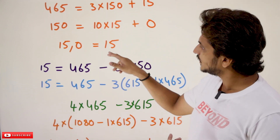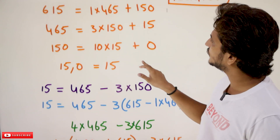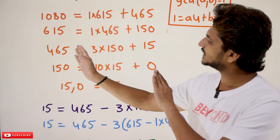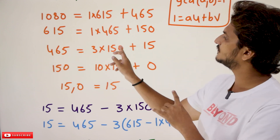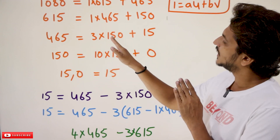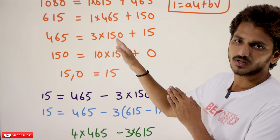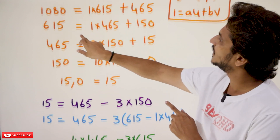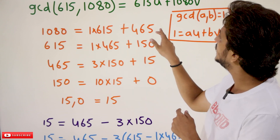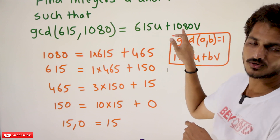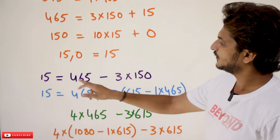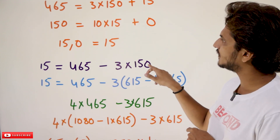To find u and v we go in reverse order. From the last step where GCD = 15, we write: 15 = 465 − 3 × 150. We write it in terms of 465 because from 465 we can get 615, and from 615 we can get 1080. Finally we need terms in the form of 615 and 1080, so that's why we are working in the reverse direction.